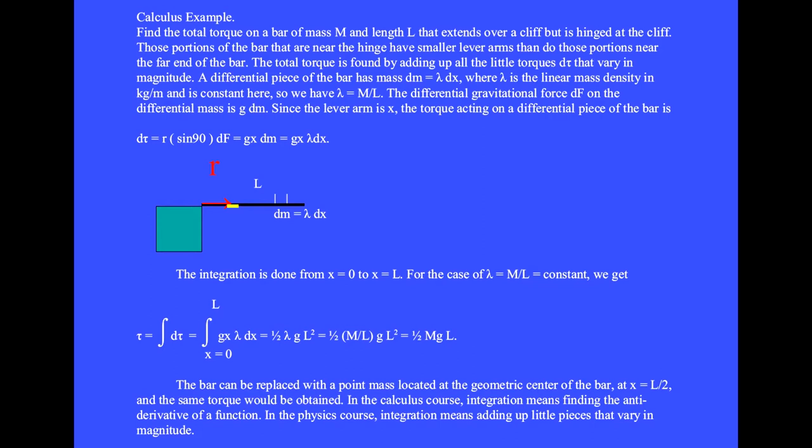Those portions of the bar that are near the hinge have smaller lever arms than do those portions near the far end of the bar. The total torque is found by adding up all the little torques, d tau, that vary in magnitude.